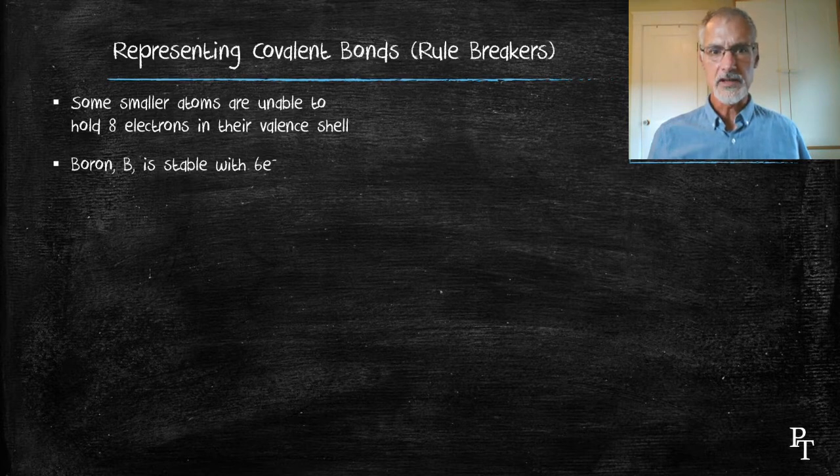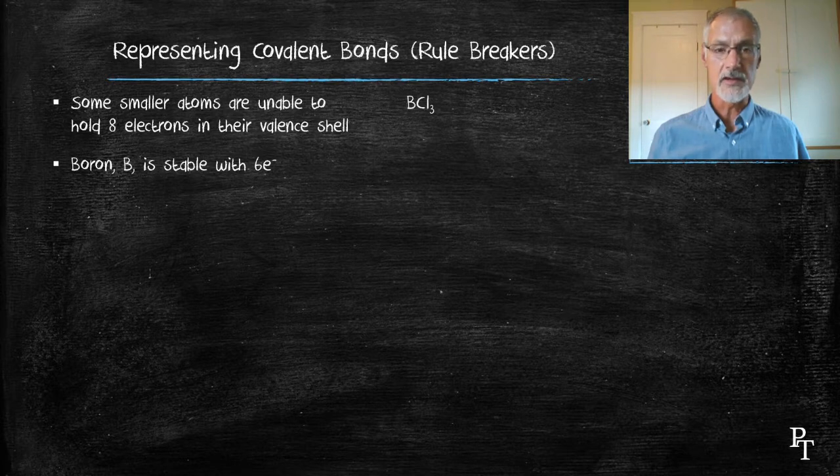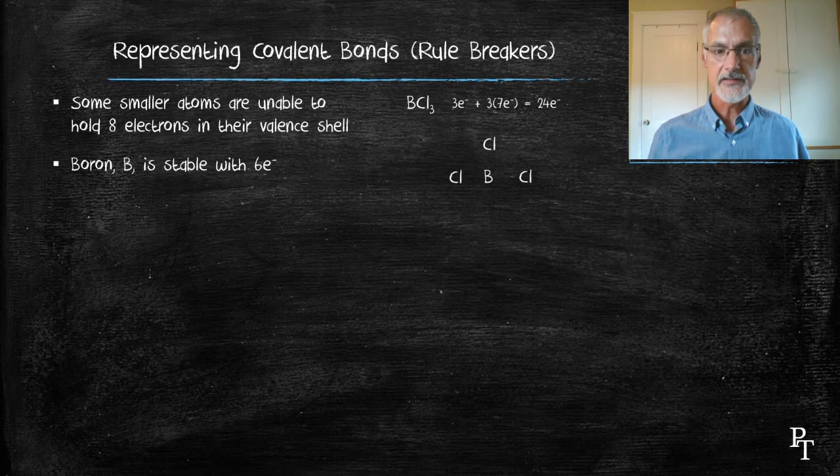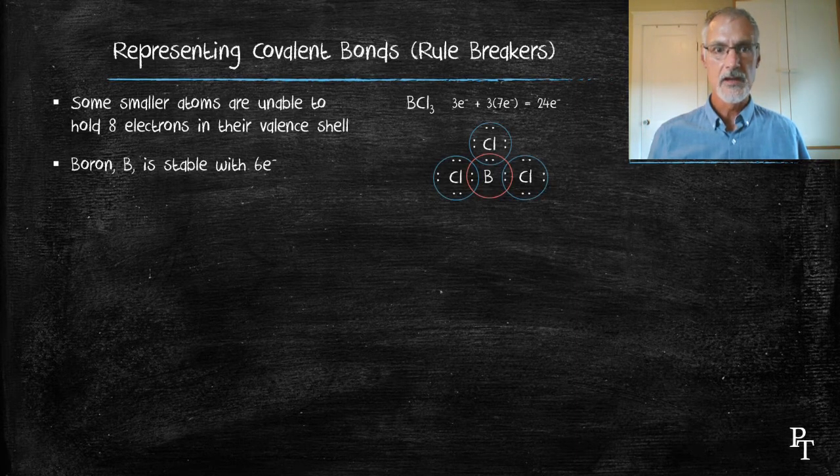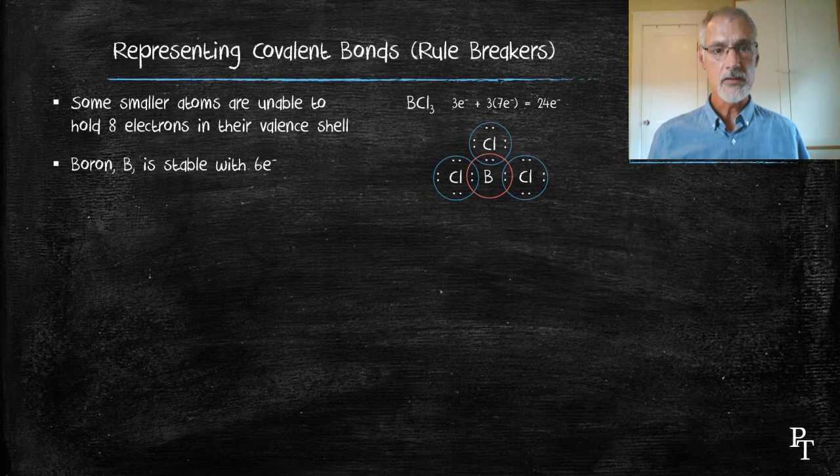If we take a look at boron trichloride, we have a total of 24 electrons. We begin with the skeletal structure, putting boron in the middle and the three chlorines on the periphery, fill up the bonding sites, and fill up the periphery. There's no electrons left. We now proceed to check their stability, and we see that boron has six in the middle. But boron being a small atom can't hold more, so there is no need to create a multiple bond. And we're finished at this point.